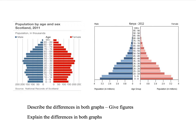What I want you to do is describe the differences in both graphs. One difference to notice is the amount of zero to four-year-olds, particularly in Kenya. Note that Kenya is measured in millions and Scotland is measured in thousands — it's very crucial that we notice that. When describing, we can compare by saying there's more or less, giving figures and age groups, and we should be fine.